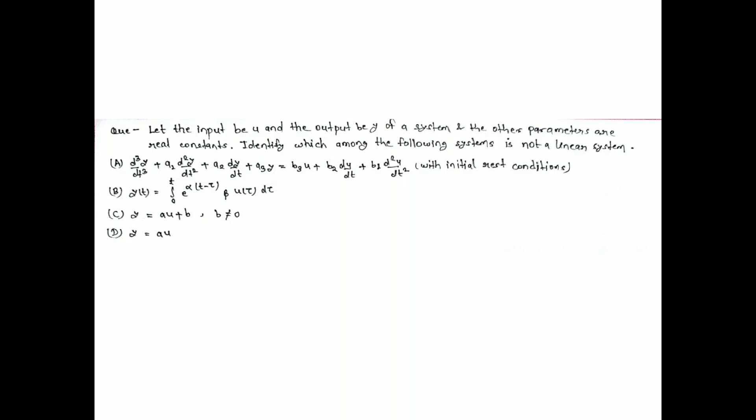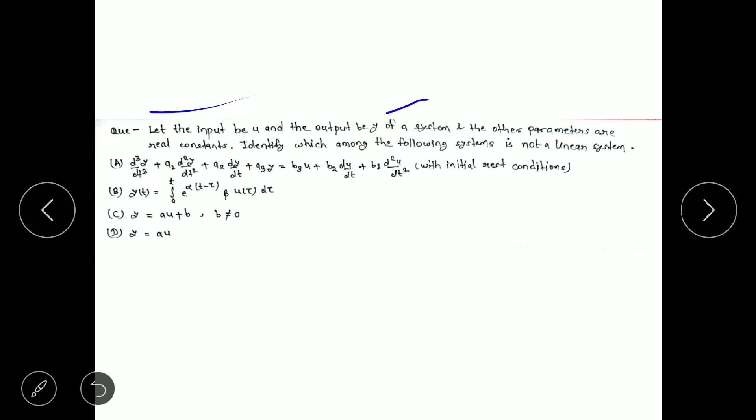Hello guys, in this video I am going to discuss a problem from Signal Systems which came in GATE 2018. This question is based on the linearity property of any system. The question is: let the input be u and the output be y of a system, and the other parameters are real constants. Identify which among the following systems is not a linear system. Four options are given.